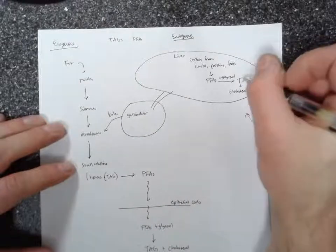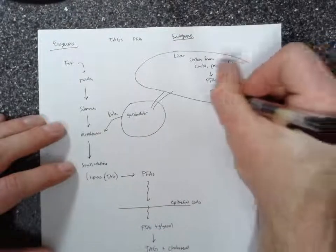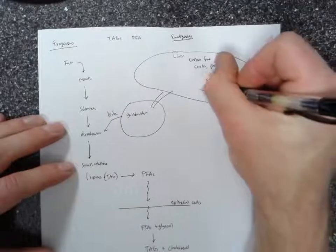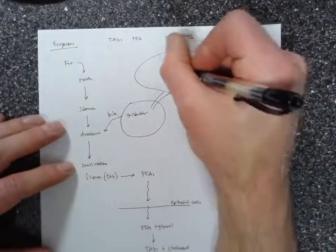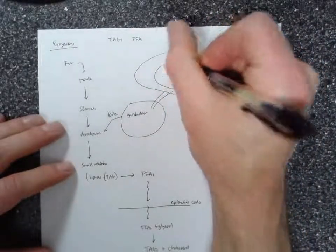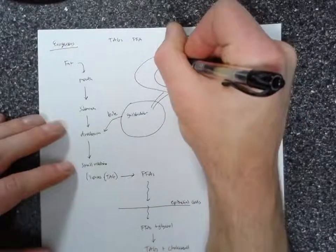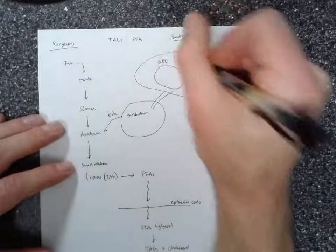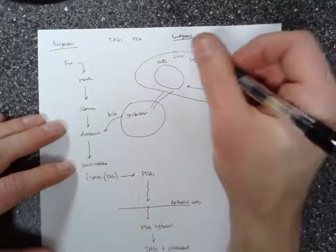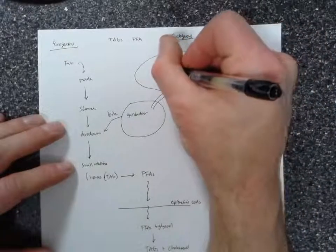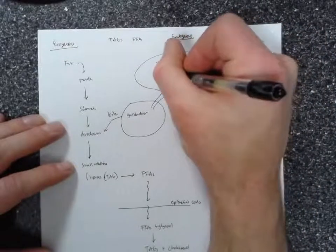Then these tags are combined with cholesterol and cholesterol esters. And then these are packaged into, I'm going to draw two arrows here, these are packaged into what are known as VLDLs or very low density lipoproteins. And here's tags and cholesterol.